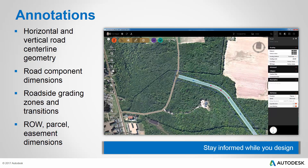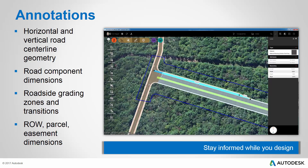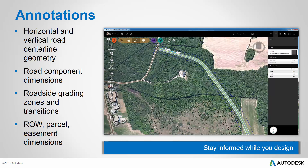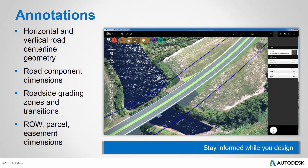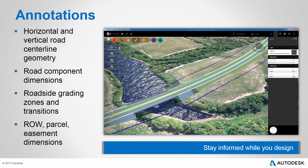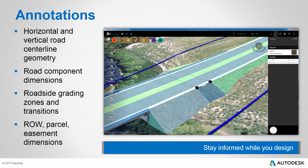If I move to the end of this design, you'll notice that I have a turning lane, and I may be interested in knowing how long that turning lane is — in this case, roughly 500 feet, with a transition of roughly 62 feet. We can also get information about roadside grading. If I go to this area of my design, I have several grading regions, and if I click one of them, the annotations show me the length of the transition as well as the stations where it starts and ends.